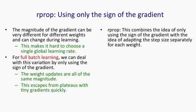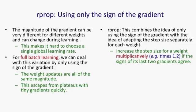RProp combines the idea of just using the sign of the gradient with the idea of making the step size depend on which weight it is. To decide how much to change a weight, you don't look at the magnitude of the gradient — you just look at the sign of the gradient — but you do look at the step size that you've decided on for that weight. That step size adapts over time, again without looking at the magnitude of the gradient. We increase the step size for a weight multiplicatively, for example by a factor of 1.2, if the signs of the last two gradients agree.